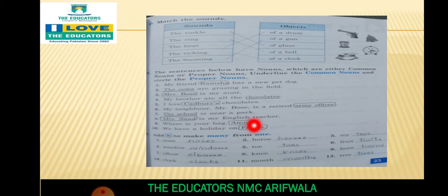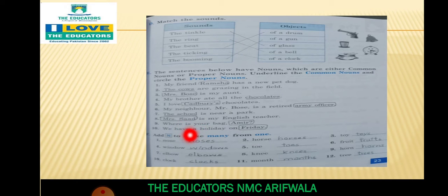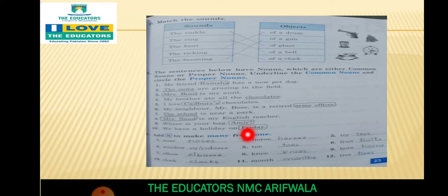Mrs. Saad is my English teacher. Mrs. Saad کو circle کر دیا کیونکہ وہ proper ہے۔ Where is your bag, Amir? Bag کو underline کریں گے کیونکہ وہ common سی چیز ہے۔ اور Amir کو circle کریں گے کیونکہ وہ proper noun ہے۔